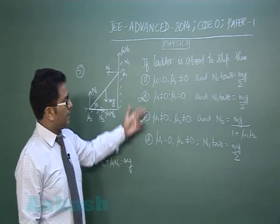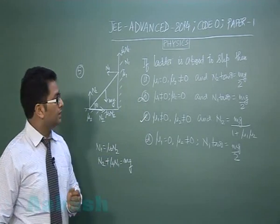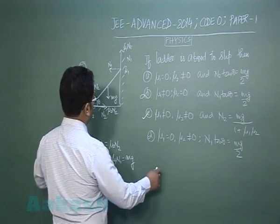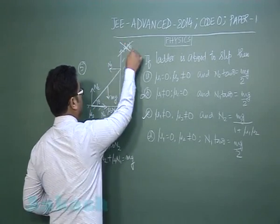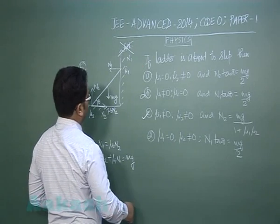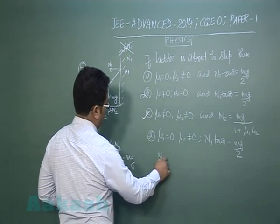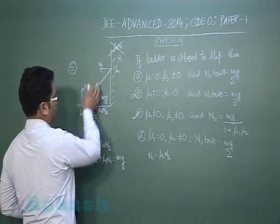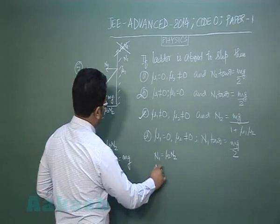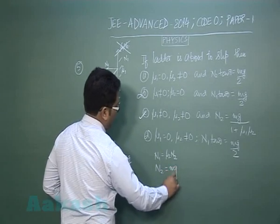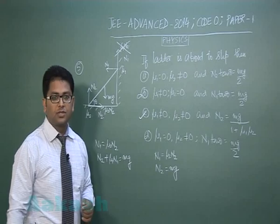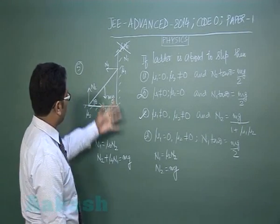Then A and D is related when mu1 is 0, so the friction is not there. The equation would be, if this is 0, let us say along x I will have n1 as mu2 n2. Along y I will be having n2 equals to mg.